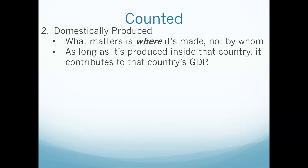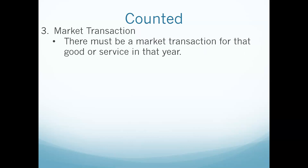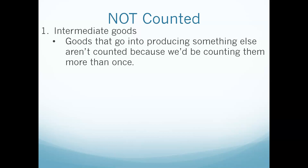We only count domestically produced goods — this is where the 'domestic' in gross domestic product comes from. As long as it's produced inside the US, it counts towards US GDP. What matters is where the product is made, not who makes it. So Nissan or Toyota making cars inside the US — those cars count towards US GDP, not Japan's. You also have to have a market transaction for that year; it actually has to be sold. Those are the things we count. We don't count intermediate goods like those tires Ford buys, because we'd be counting them more than once.